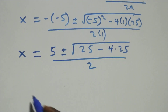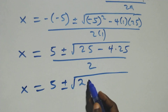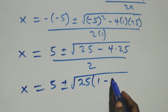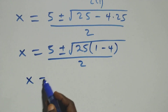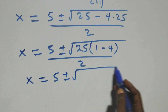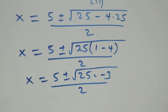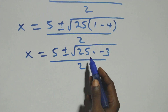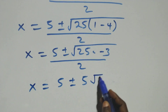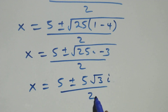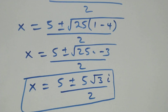Simplifying, x equals 5 plus or minus square root of negative 75 over 2, which is 5 plus or minus 5 times root 3 times i, over 2. So we have two complex solutions from Case 1.